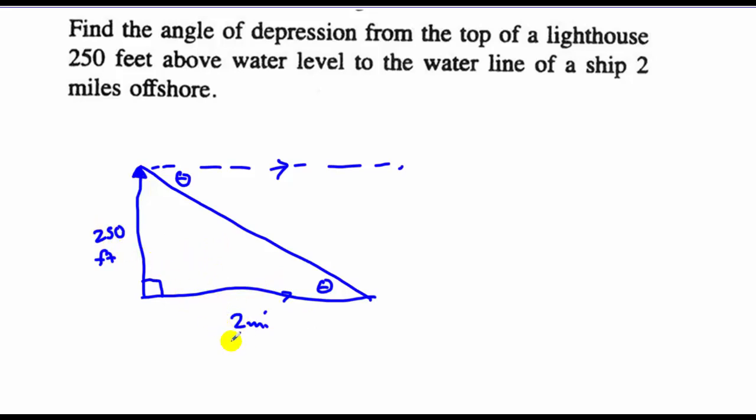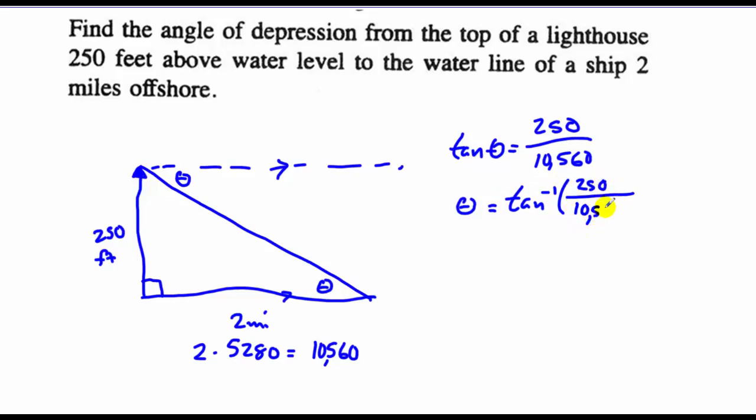Now, in order to find these values, we're going to have to have the same units. So this is 2 times 5,280 feet, which is equal to 10,560. So now I use my ratio of tangent, it's equal to the opposite, which is 250 over 10,560. And then I'm going to have to use an inverse once again. So theta is equal to the inverse tangent of 250 over 10,560. That value for theta is actually pretty small, it's about 1.36 degrees.